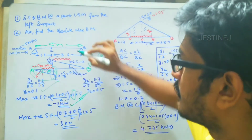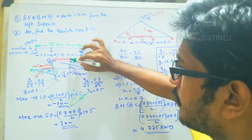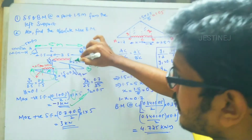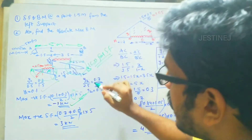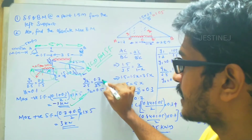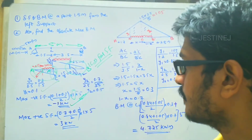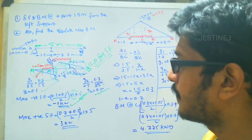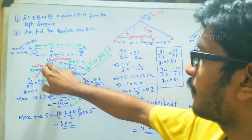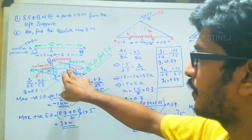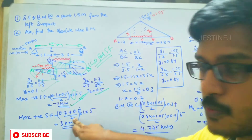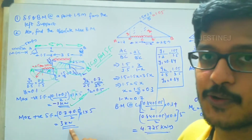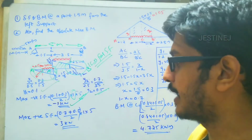Similarly, for maximum positive shear force, Y2 is calculated when the head of the UDL is 1 meter past C. Using similar triangle law: Y2 by 0.5 equals 0.7 by 3.5, giving Y2 = 0.1. The trapezium area gives: (0.7 + 0.5) / 2 multiplied by 1 (span), multiplied by 5 (UDL magnitude), giving 3 kilo Newton as the maximum positive shear force.